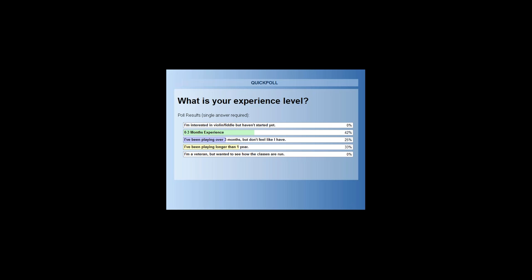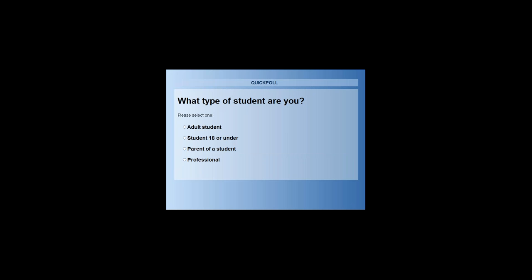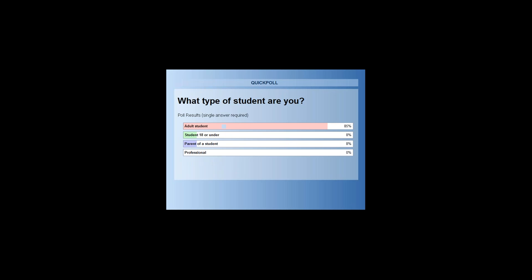Let me get into the next poll question. This is what would happen if you came to my house for a lesson — I would ask you questions. So: what type of student are you? Are you an adult student, under 18, or a parent of a student working with your child? Or maybe a professional wanting to see how I run classes — that's totally fine. Looks like quite a few adult students, a couple kids, and a couple parents.